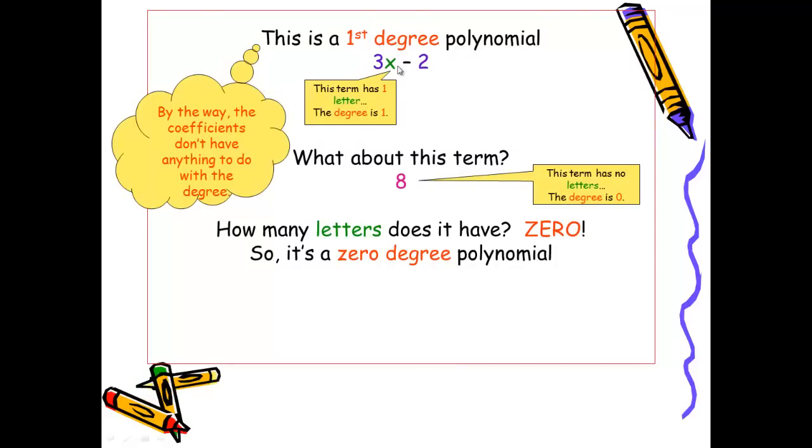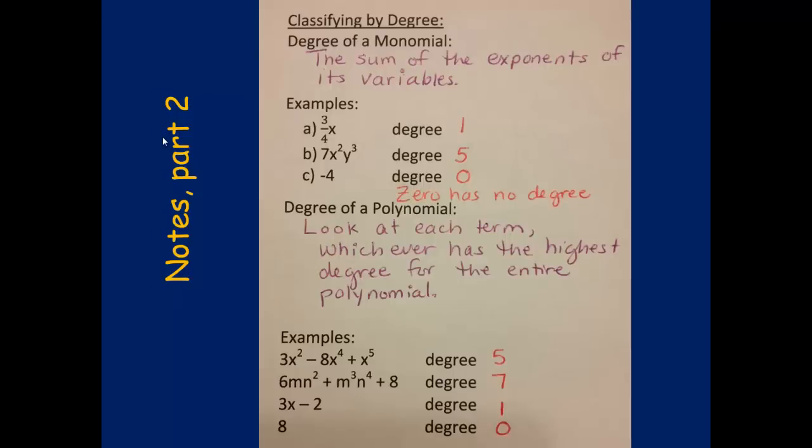Looking at a couple more examples, if I have 3x - 2, the x has the highest degree of these two terms. So this would be a first degree polynomial. And again, anytime you have just a constant, such as the number 8, it has no variables or letters, so its degree is zero. Keep in mind that coefficients do not have anything to do with the degree. So don't make any mistakes of adding in your coefficients.